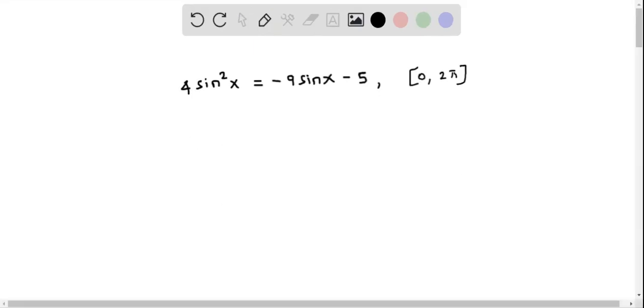We will solve this trigonometric equation in quadratic form within the interval 0 to 2π. So first I am going to add 9sinx and 5 to both sides.